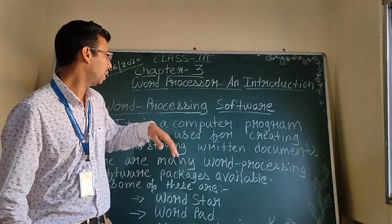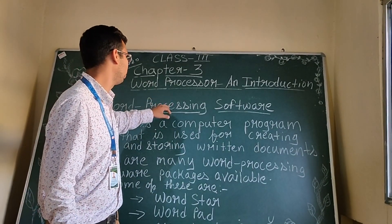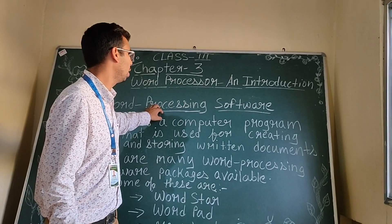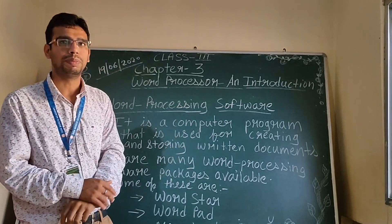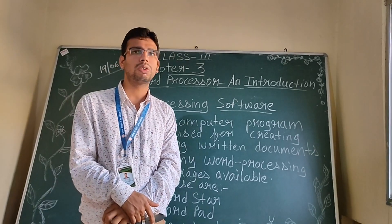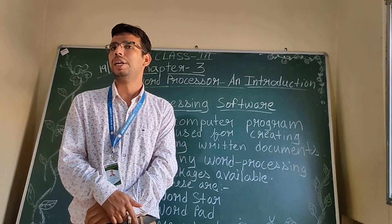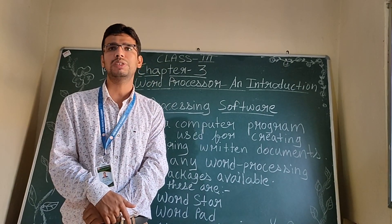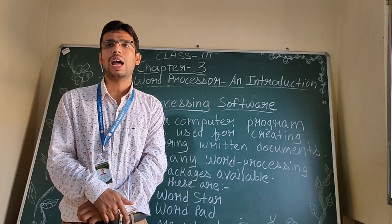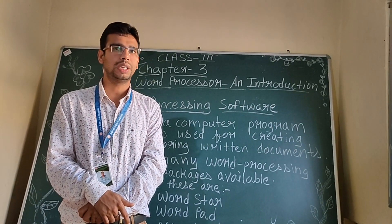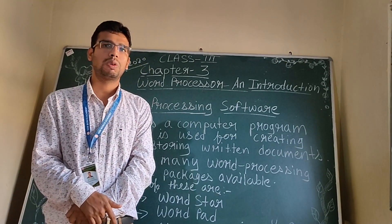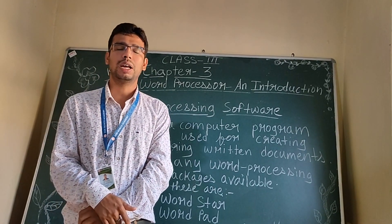Let me explain about Word Processing Software. Before explaining, let me give one example. You all must have heard about the food processor. It is used to perform various functions such as blending, grinding and even cutting vegetables. The same way we use a Word Processor in our computer.